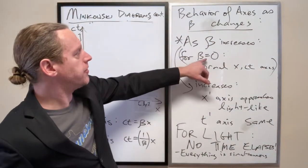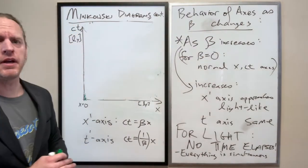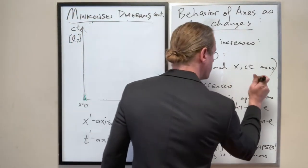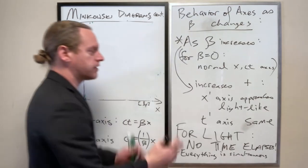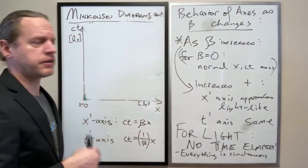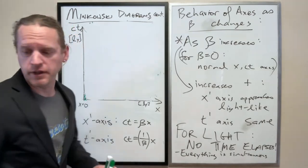And one more thing here. Looking back at this diagram here, we're talking about changes in beta. Now, if you have beta of zero, the axes are the same. For increasing in positive beta, we'll say, the axes approach there. Now, what if we consider a case of negative beta?